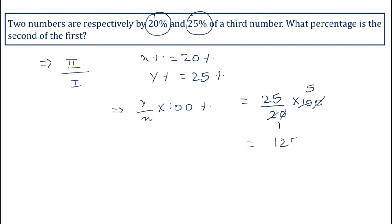That's 125%. So 125% is the second of the first.